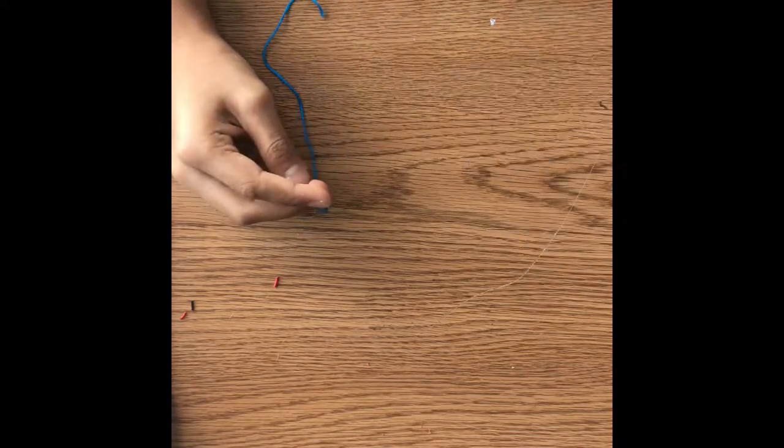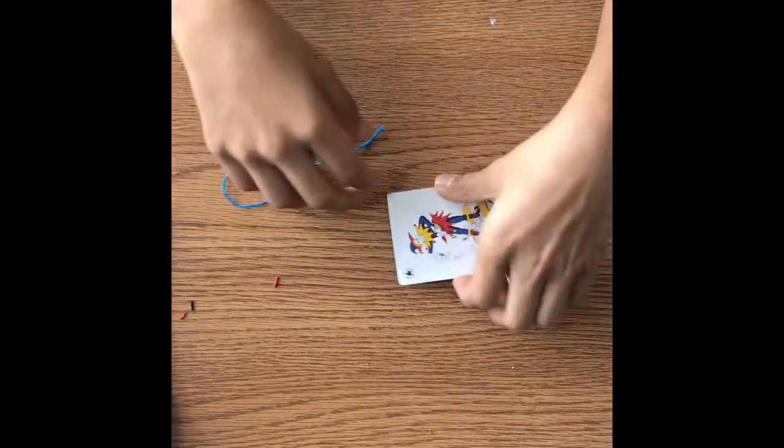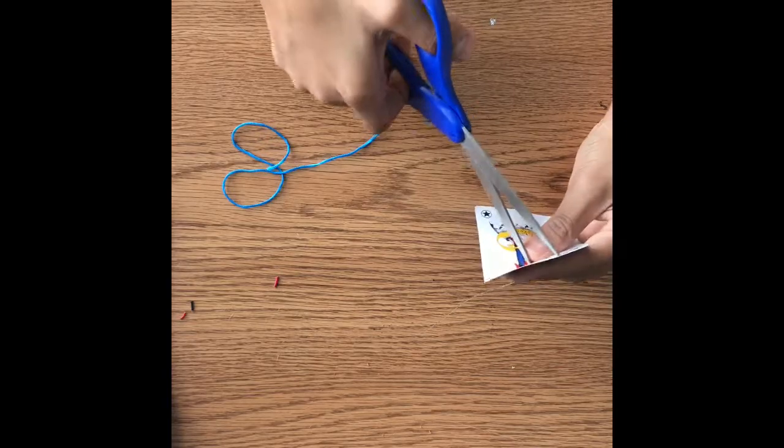All right, so here are our two things for the trip wire. We have a card and we have some string. Obviously, this isn't the real trip wire—I'm going to change it later. I'm just seeing if this works. So right now, we're just going to put a hole in this card.